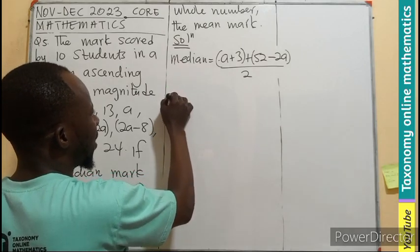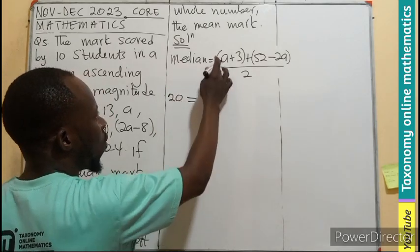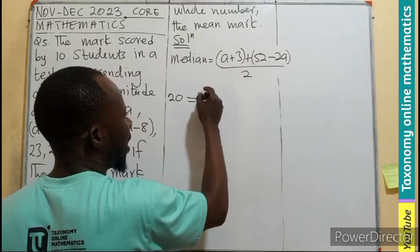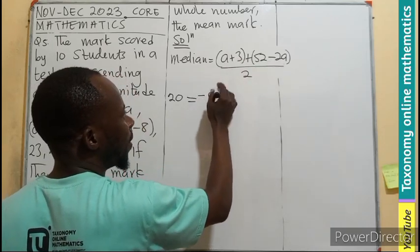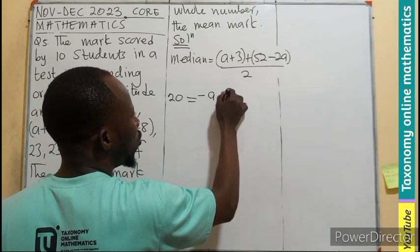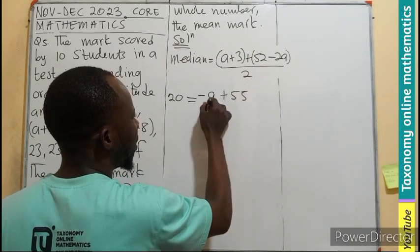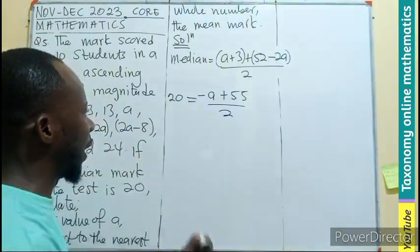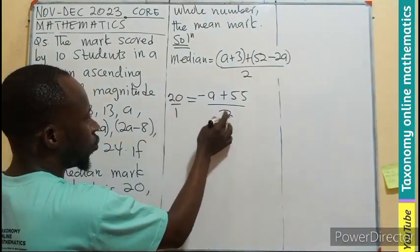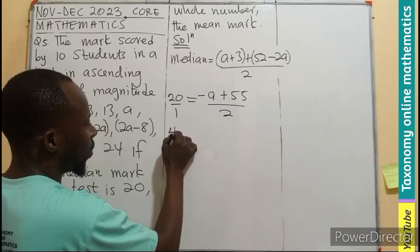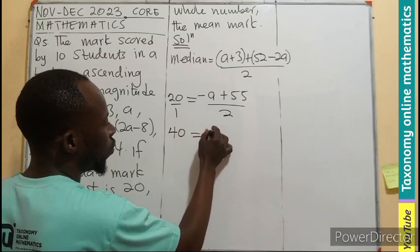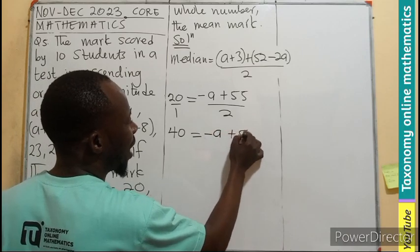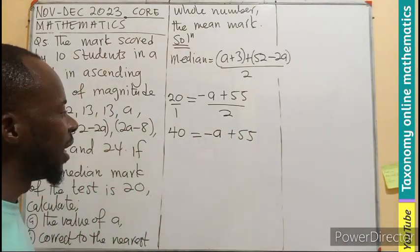So I have 20 equals to A minus 2A. That will give you minus A. 3 plus 52 will give you 55 divided by 2. This is a fraction. So we cross multiply. So 2 times 20, 40 equals to minus A plus 55, or 55 minus A.